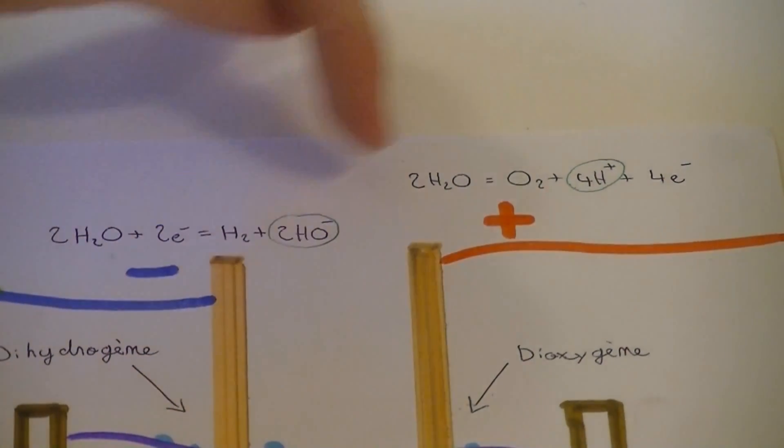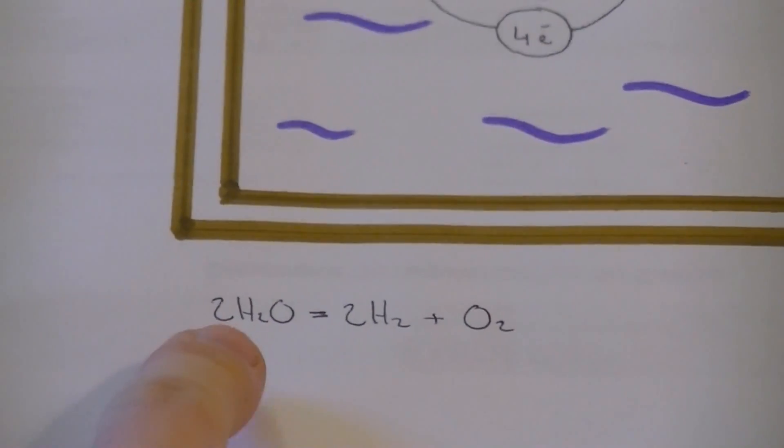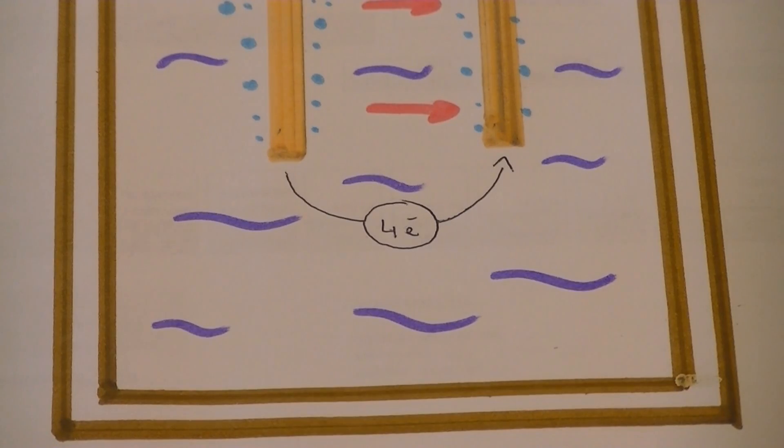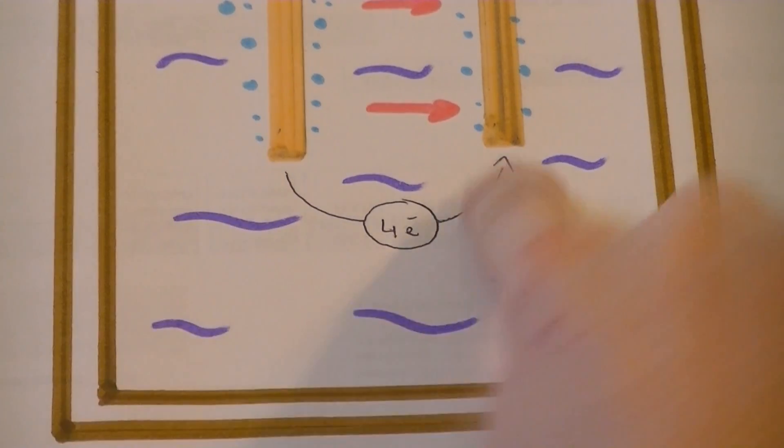In the end, both compounds we have here can react together to create water, making this simple final reaction. Each time this reaction takes place, the equivalent of 4 electrons move from the negative side to the positive one.